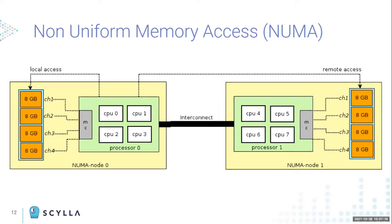Another architectural change that came with the increased number of cores is Non-Uniform Memory Access, or NUMA. In the past, all cores had equal access to all memory. That's no longer the case — memory is physically split between parts of the motherboard, so some cores have local access to part of the RAM but remote access to other parts. If a core needs to access memory further away from it, that increases latency. Newer applications like Scylla can account for this, but older applications cannot.